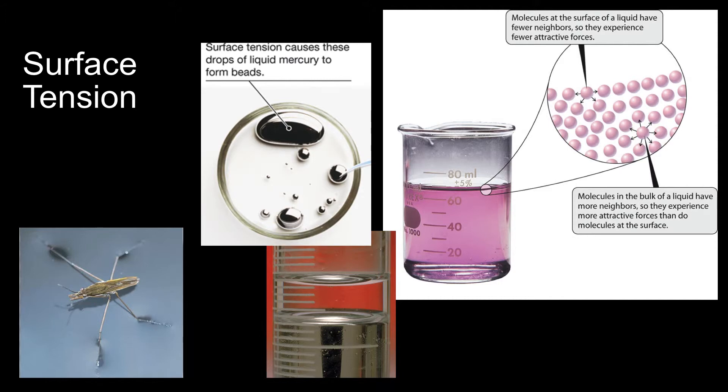Note that mercury has a particularly large surface tension causing droplets to form beads and giving the top of the mercury column in a barometer a rounded shape called a meniscus.